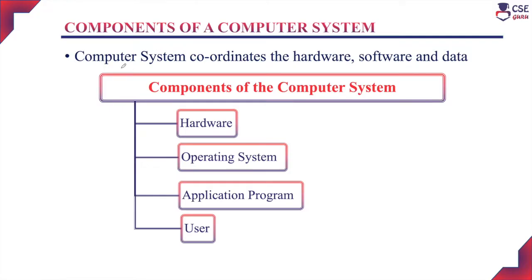Considering the computer system, it coordinates the hardware, software, and data. The computer system is divided into four different components: hardware, operating system, application programs, and the user.